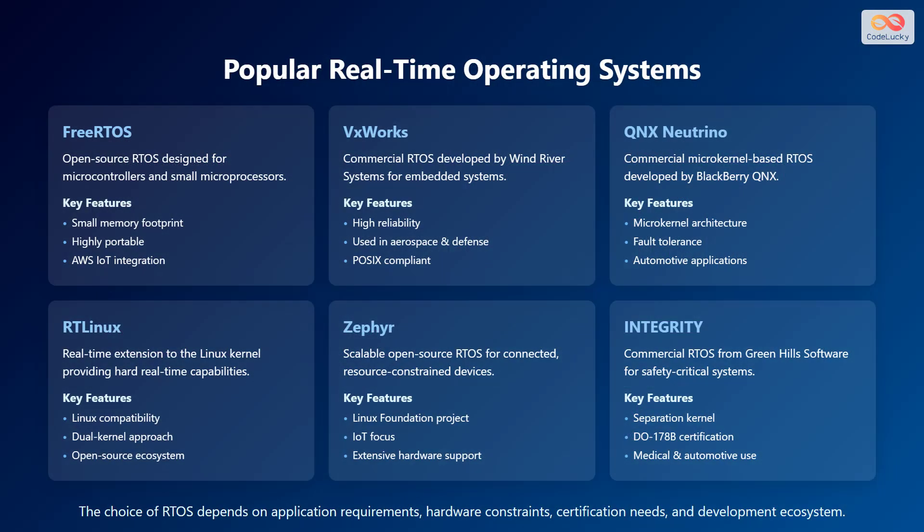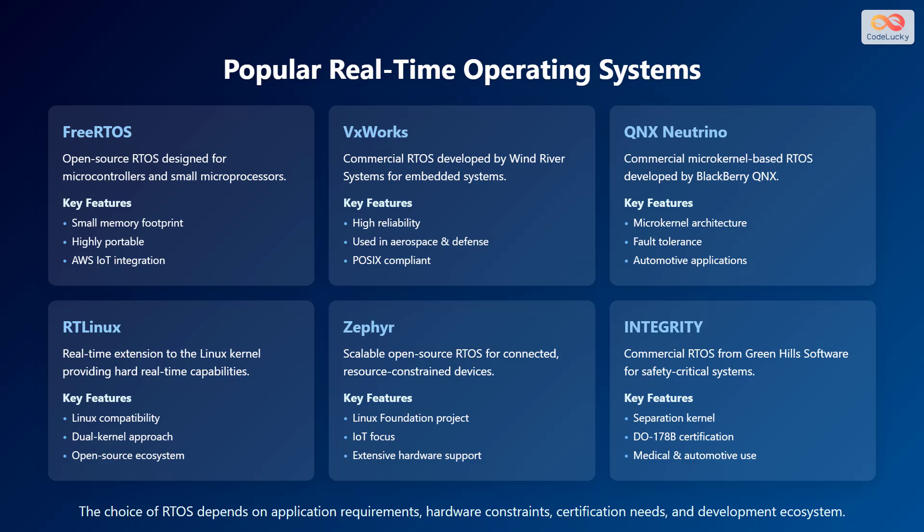Let's explore some popular real-time operating systems widely used in the industry. FreeRTOS is an open-source RTOS designed for microcontrollers and small microprocessors, with a small memory footprint, high portability, and AWS IoT integration. VxWorks is a commercial RTOS developed by Wind River Systems, known for high reliability, used in aerospace and defense applications, and is POSIX compliant. QNX Neutrino is a commercial microkernel-based RTOS developed by BlackBerry QNX, featuring a microkernel architecture, fault tolerance, and common use in automotive applications. RTLinux is a real-time extension to the Linux kernel providing hard real-time capabilities, with Linux compatibility, a dual-kernel approach, and an open-source ecosystem.